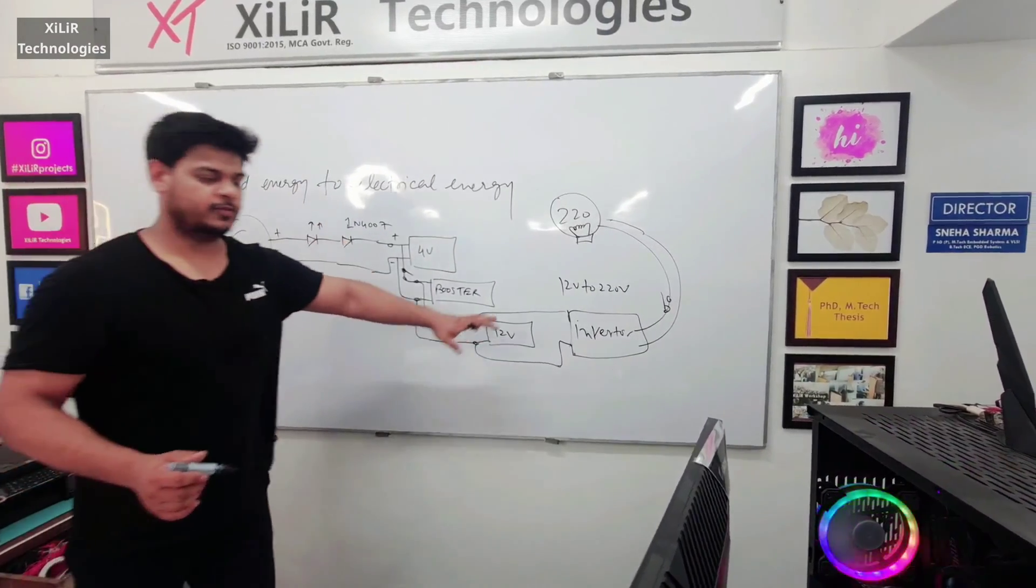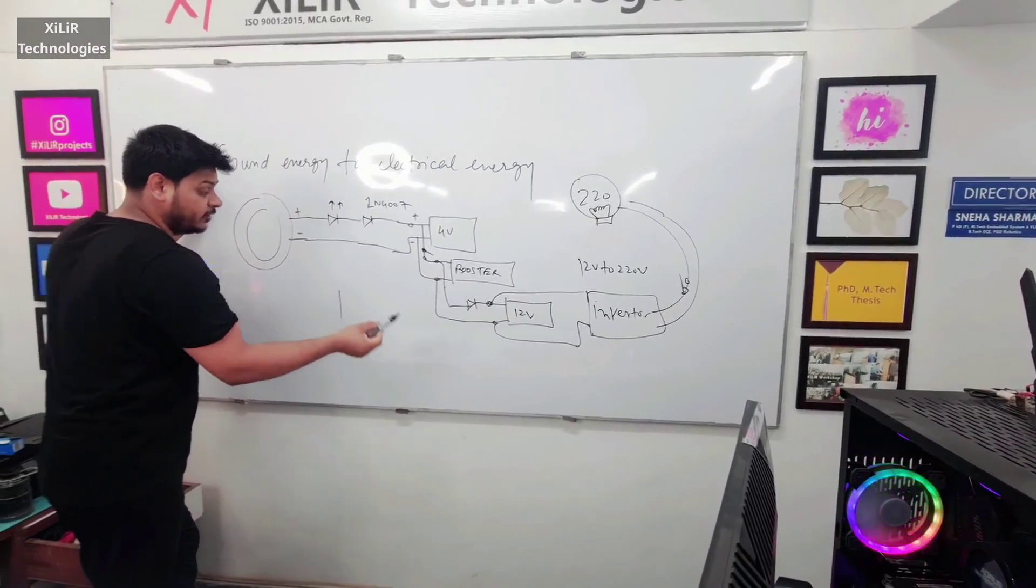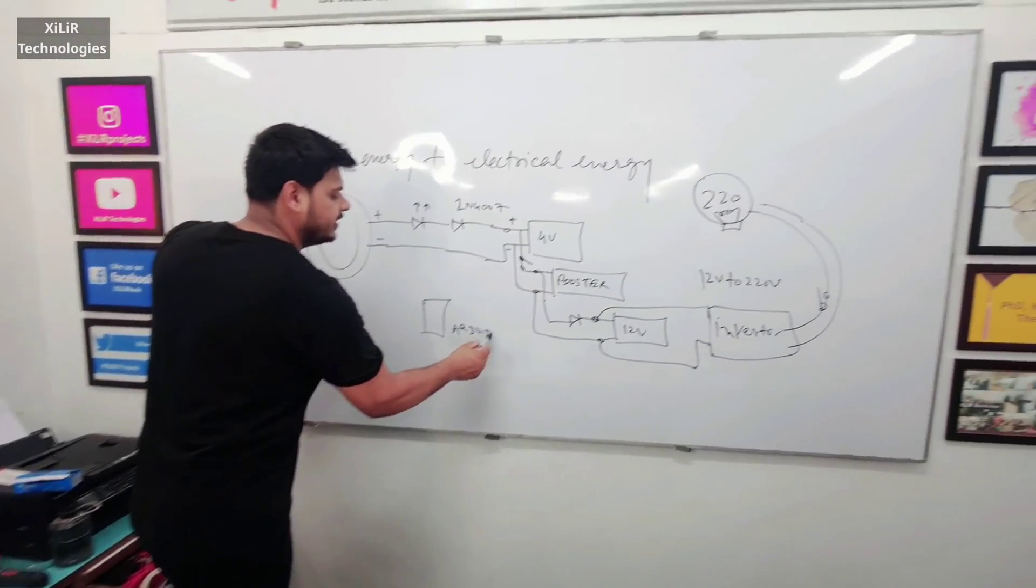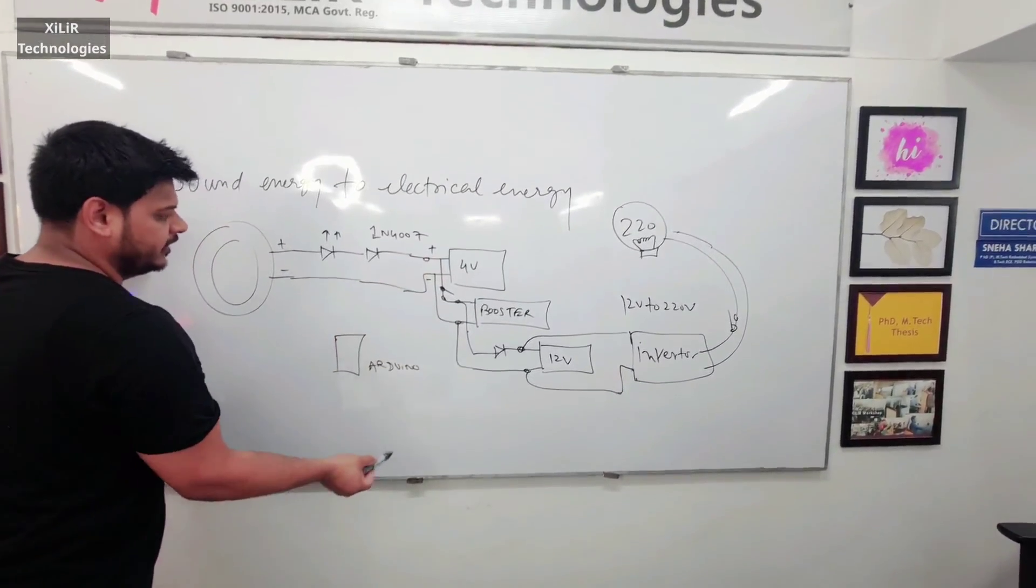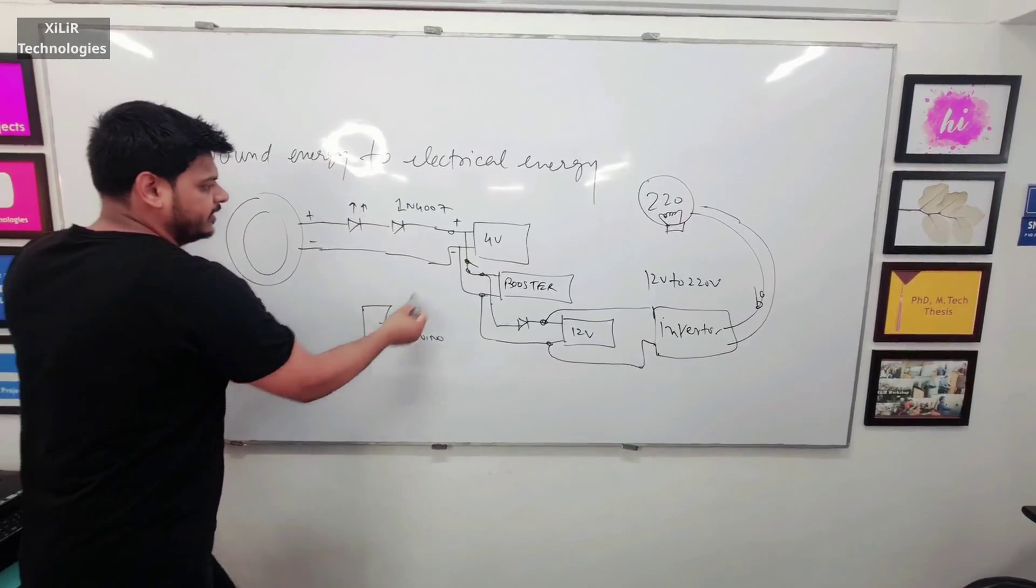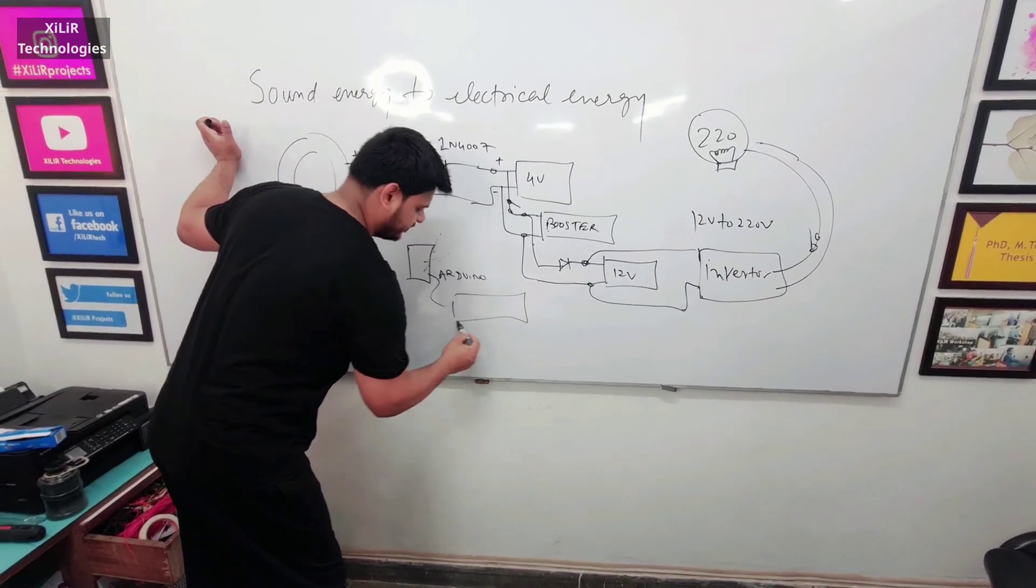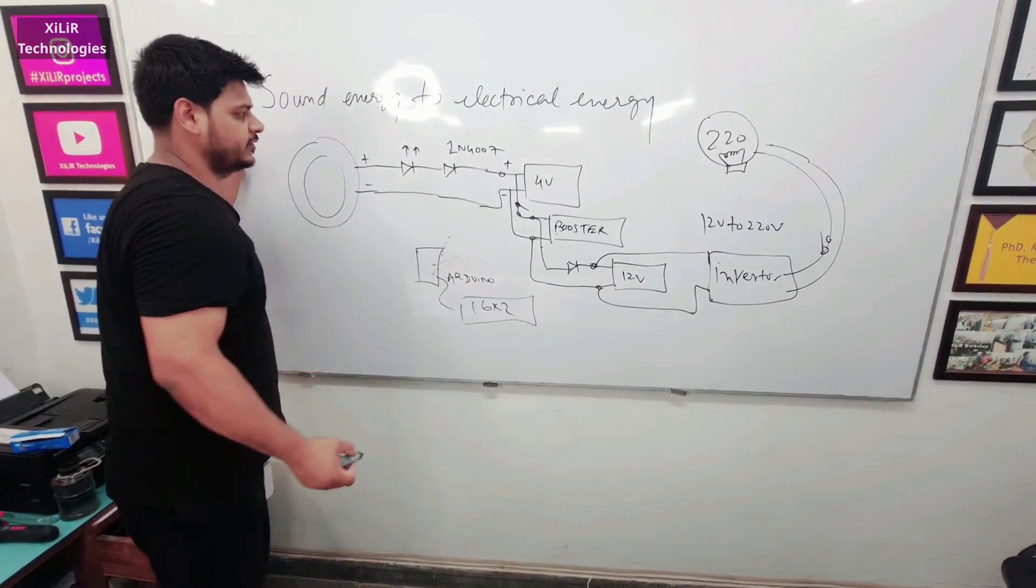So this is a complete commercial of projects and we can use multimeter or we can also use microcontroller or Arduino to measure these voltages at different points, like this point we can measure, this point we can measure and connect an LED. We can add this thing in the project.